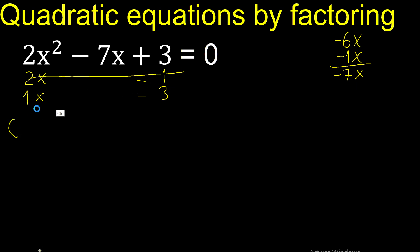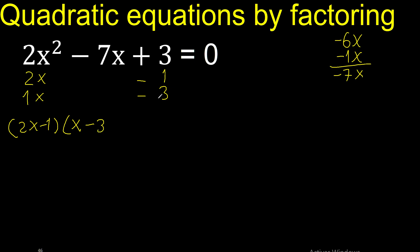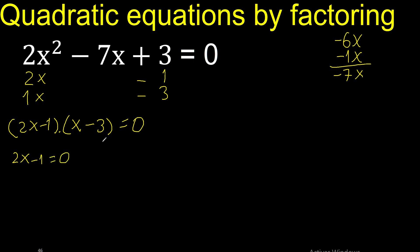Therefore, like this here. 1 multiplied by x is x, minus 3 is equal to 0. Therefore this factor is equal to 0, or this factor is equal to 0.